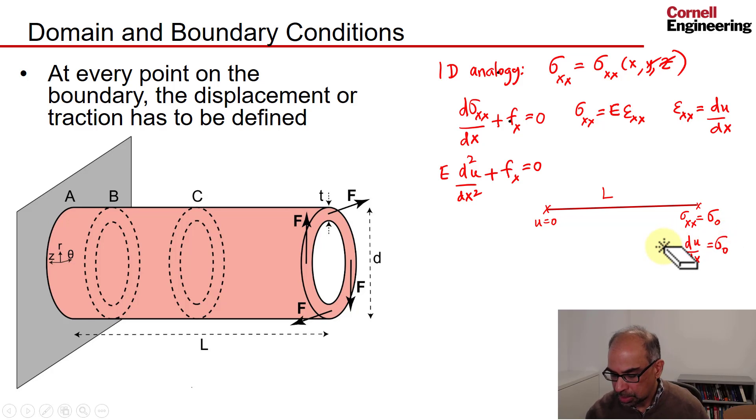I can bring E over. So essentially, on the right end, I have a condition on the derivative of the displacement. So these are the two fundamental kinds of boundary conditions you can have: a boundary condition on the displacement or on the derivatives of the displacement.